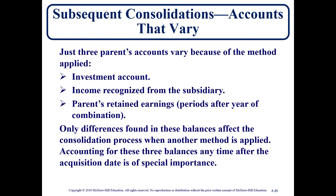The accounts affected are the investment account on the balance sheet, the income recognized by the parent from the subsidiary, and the parent's retained earnings. This is only on the parent side — just the parent's financial statements; it does not affect the subsidiary. And it doesn't affect the consolidated totals, because regardless of whether we use equity, initial value, or partial equity, we end up with the same consolidated totals.